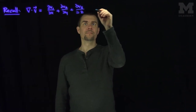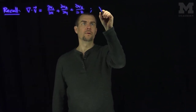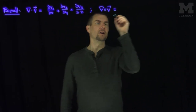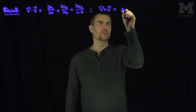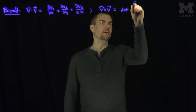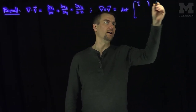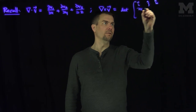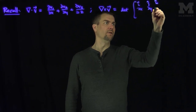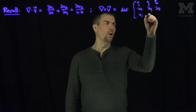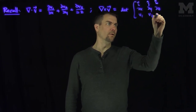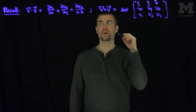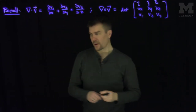And the curl of a vector field v is exactly just the determinant with rows i, j, k; the x derivative, the y derivative, the z derivative; and v1, v2, v3. That's the definition of curl. So this is divergence, and this is curl.